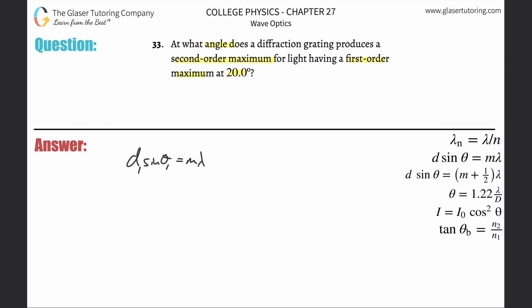So this is like d1 sine theta 1 equals m1 wavelength 1, and then create a second equation with twos in it. This will represent all the information for the second order.